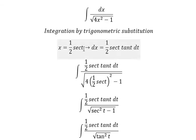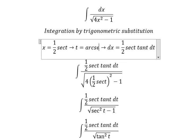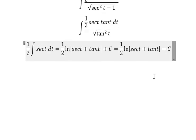Now for back-substitution, we multiply both sides by 2 and get t equal to arcsecant of 2x. So we put this one in here.